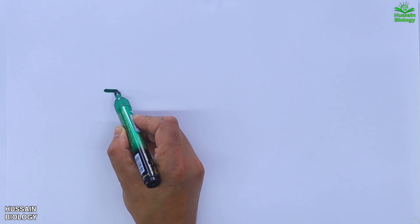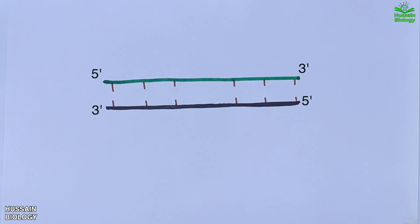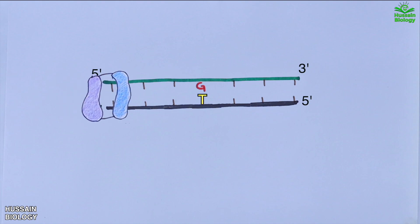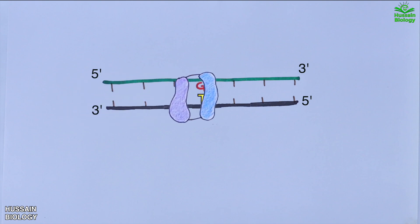Now let's see the whole mechanism in detail. Here in the diagram we have the DNA containing mismatched bases. The daughter strand has thymine instead of cytosine and we need to repair it. First is the recognition of the mismatch: the MSH2 and MSH6 complex comes in, binds the DNA strands, and scans for the mismatch.